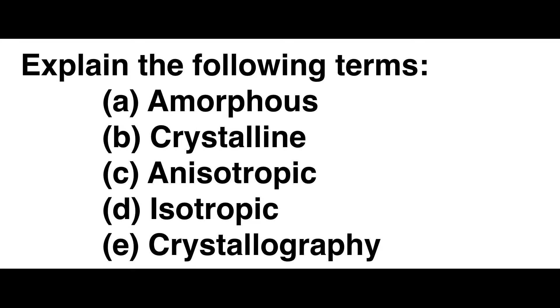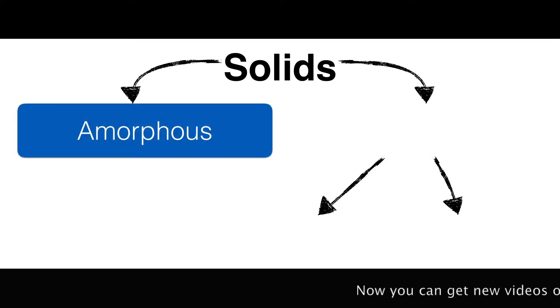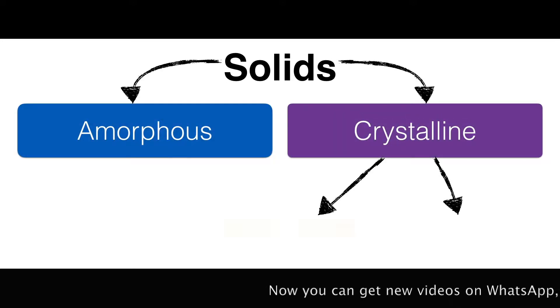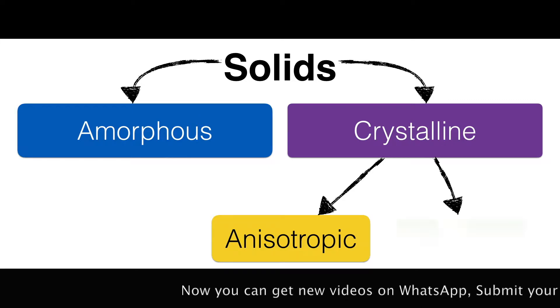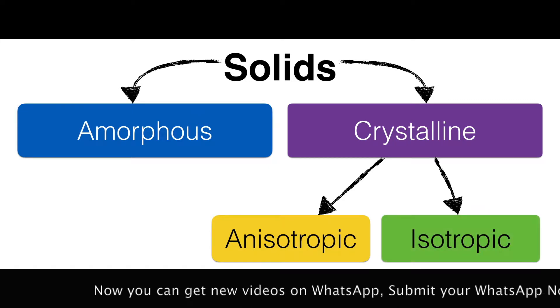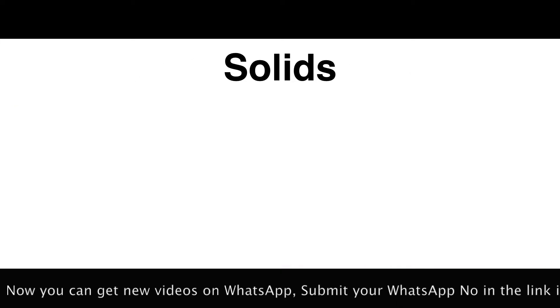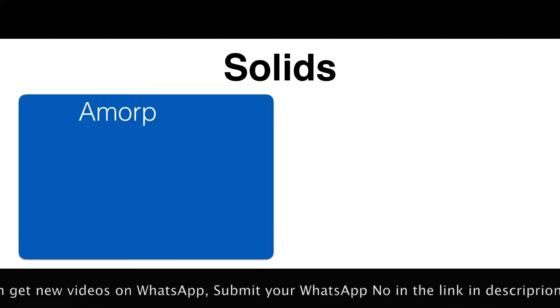If you like my video please click on the like button, and for more videos please subscribe to my channel on YouTube. We will explain the following terms: amorphous, crystalline, anisotropic, isotropic, and crystallography. Solids are divided into two parts — amorphous and crystalline — and crystalline solids are again divided into two parts: anisotropic and isotropic.